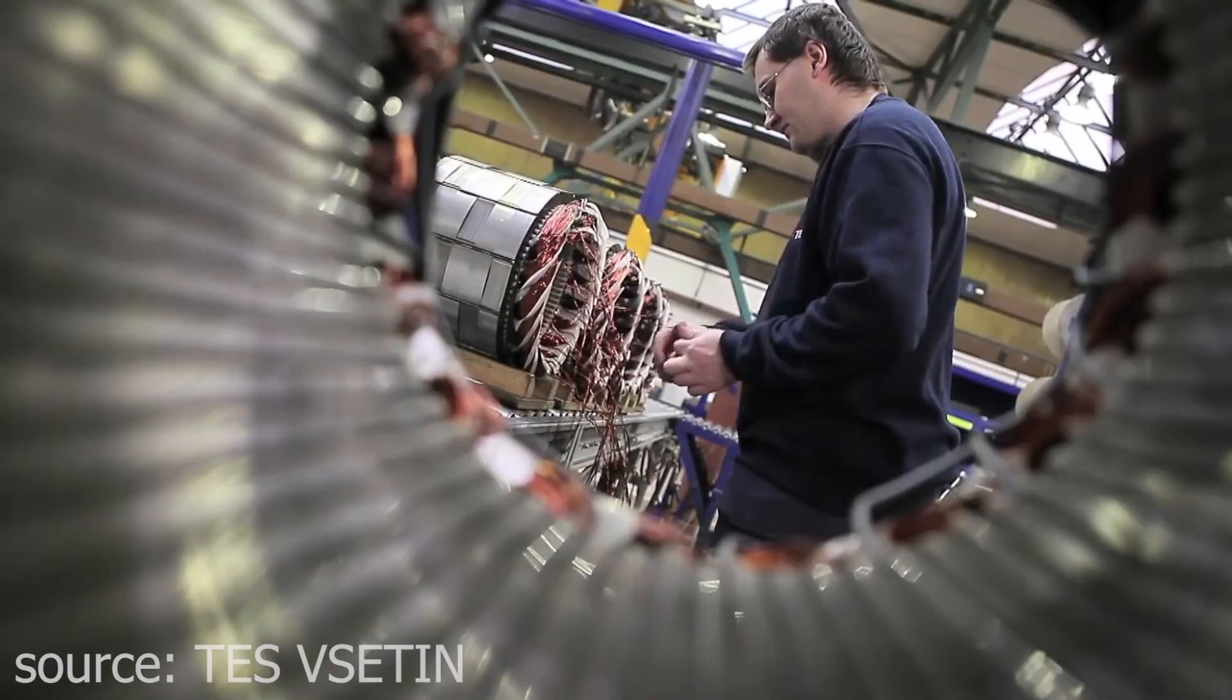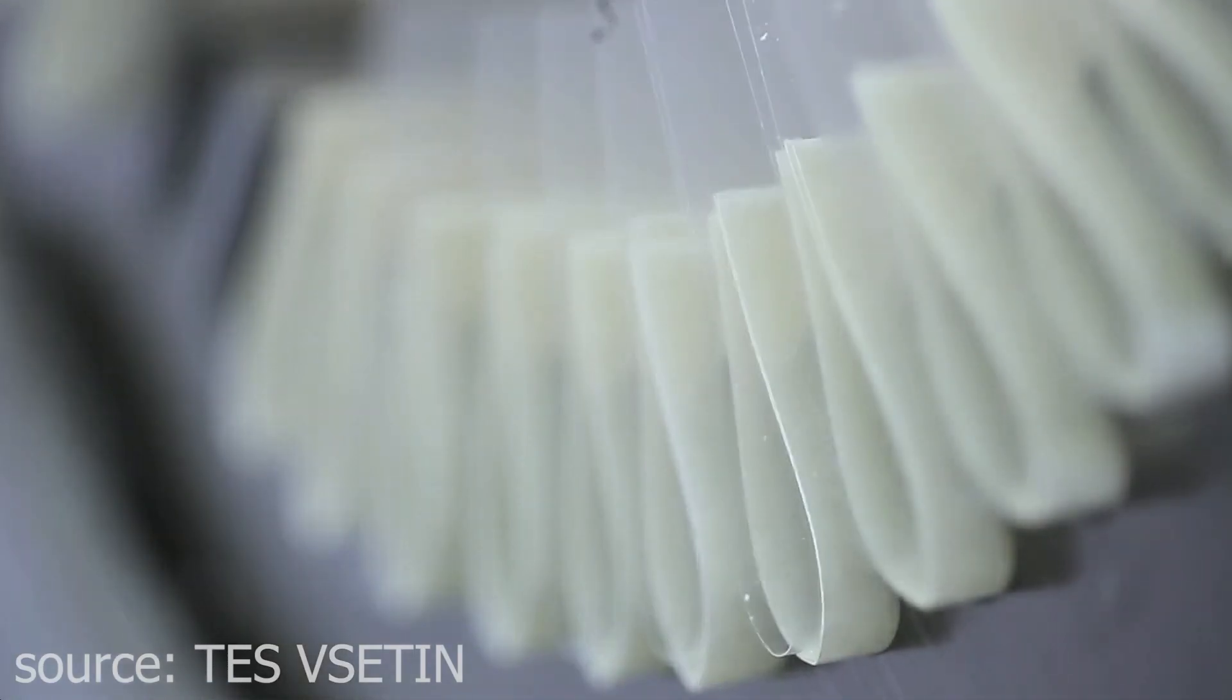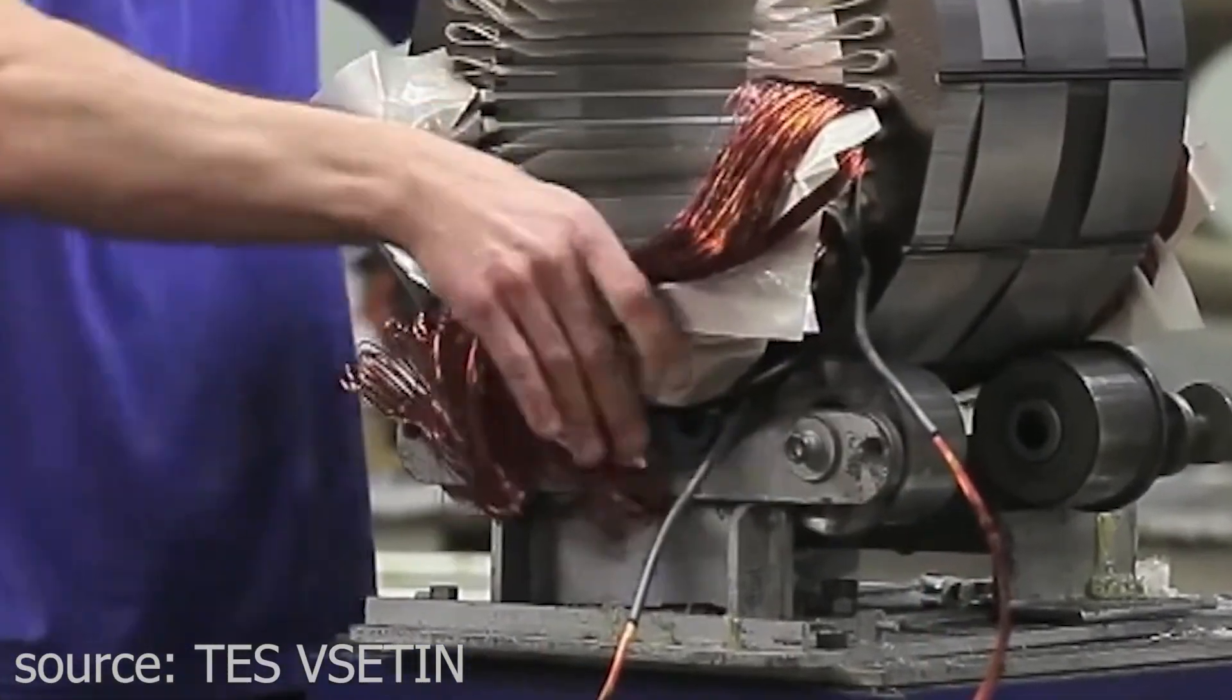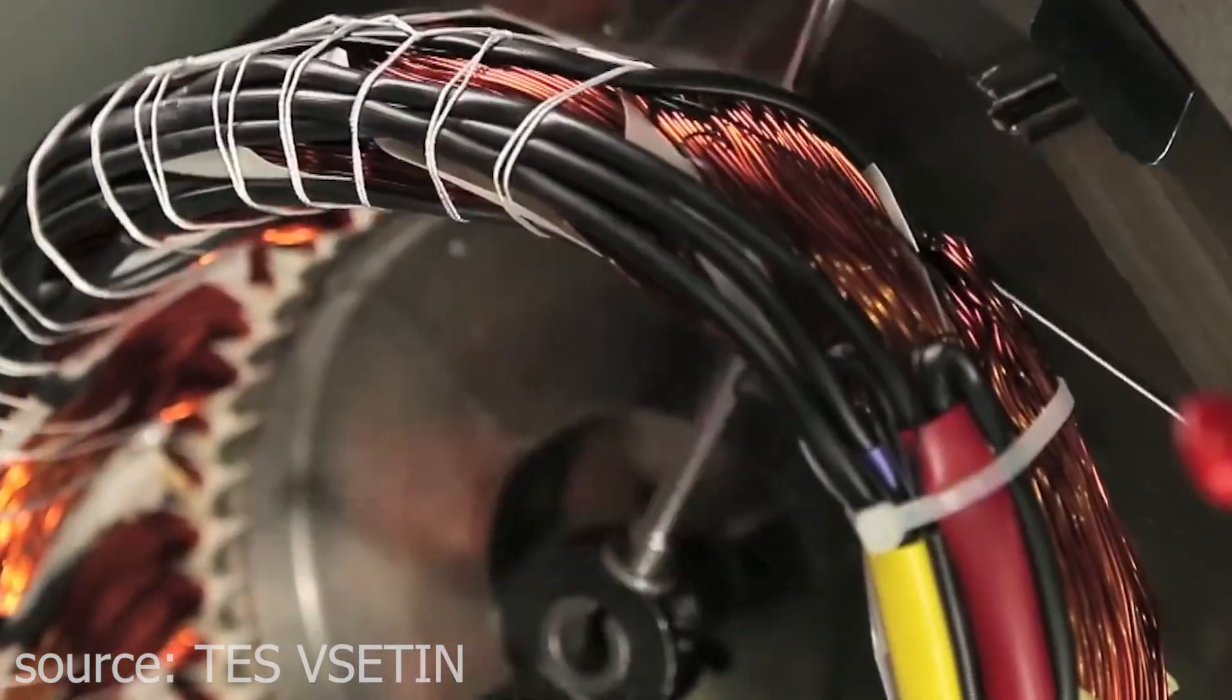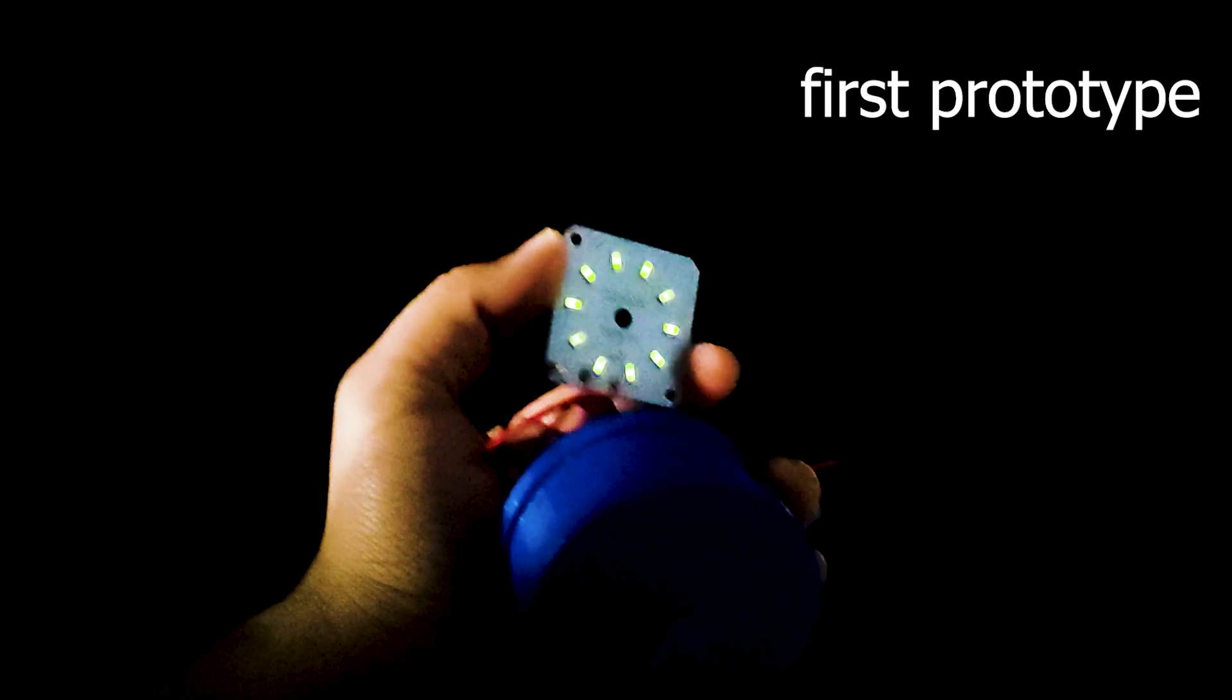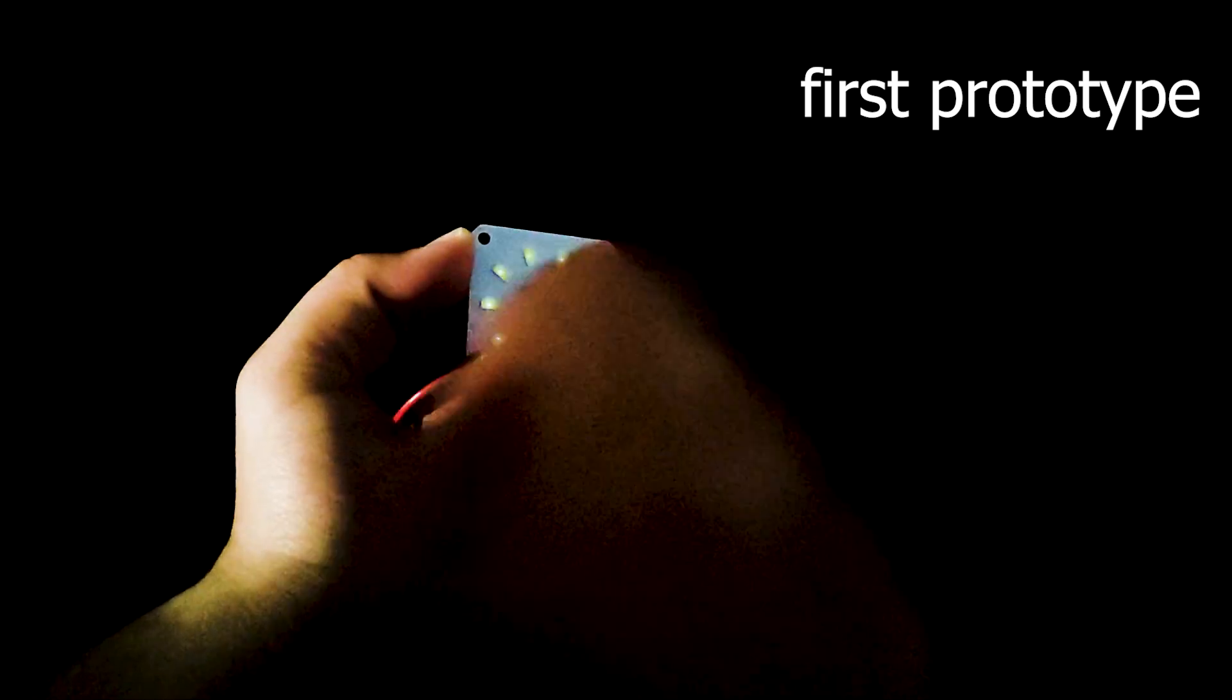Moreover, the absence of coils results in a generator that is not only more efficient, but also easier to maintain. Coils can sometimes introduce inefficiencies due to energy loss caused by resistance or heating. By eliminating coils altogether, this generator reduces energy wastage and increases overall efficiency.